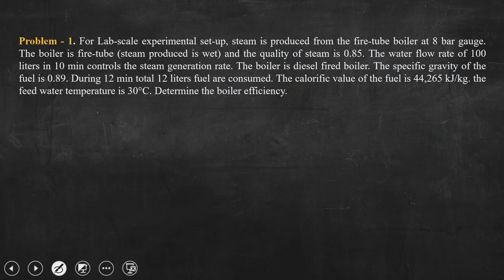Let me read out the problem statement first. For a lab scale experimental set up, steam is produced from a fire tube boiler at 8 bar gauge. The pressure given is 8 bar gauge at which steam is produced. It is a lab scale experimental set up and the boiler is a fire tube type. Steam produced is wet.